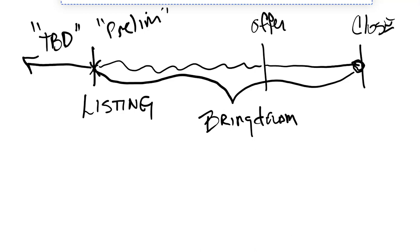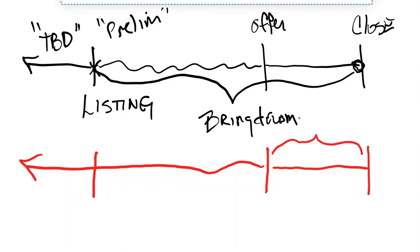Now, there is a second method in which you list the property and then you get an offer and you wait till you get the offer before you order the title work because now we know who the buyer is so they can check that. And then they close right here. This timeframe is also called a bring down, just like this one was, only it's a shorter timeframe. They bring it down from the day that they first ordered it, which was the offer to the closing date.